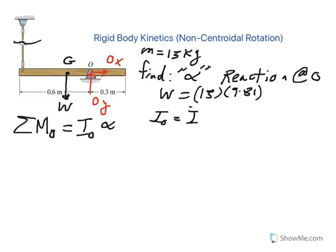Now, I sub O can be determined based on the parallel axis equation. The parallel axis equation says that if you happen to have your centroidal mass moment of inertia I bar G, you could then add a product of mass times distance squared to it to transfer the mass moment of inertia from the centroidal axis to the axis through point O, where D is the distance between the two axes.